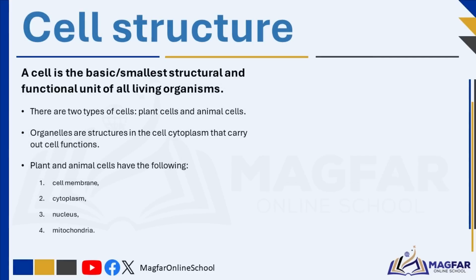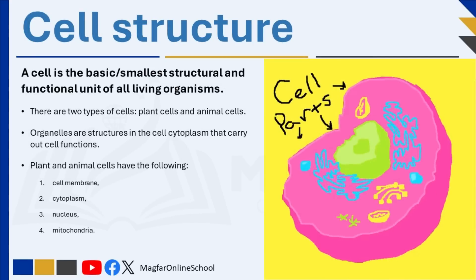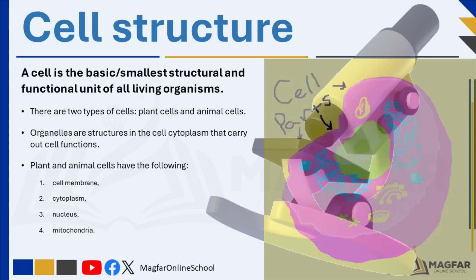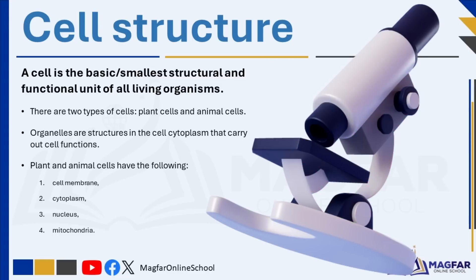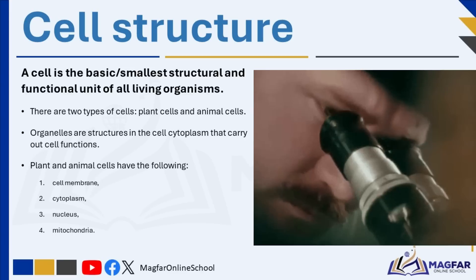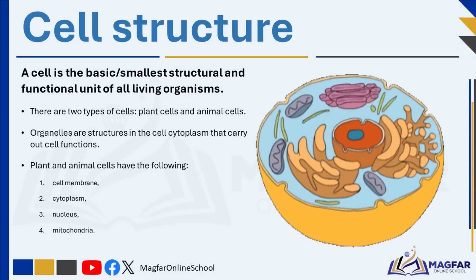A cell is the basic or smallest structural and functional unit of all living organisms. Cells are microscopic and cannot be observed with the naked eye — they can only be seen under a microscope. There are two types of cells: plant cells and animal cells.